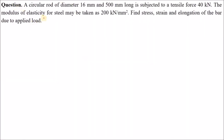First question: a circular rod of diameter 16 mm and 500 mm long is subjected to a tensile force of 40 kilo Newton. The modulus of elasticity for steel is given. Find the stress, strain, and elongation. Load is 40 kilo Newton — these are what we need to find out.